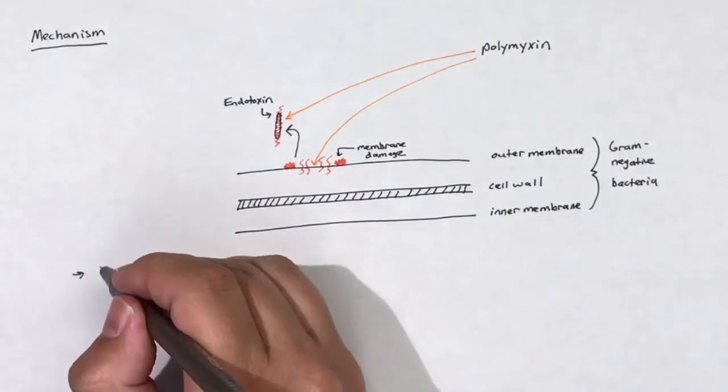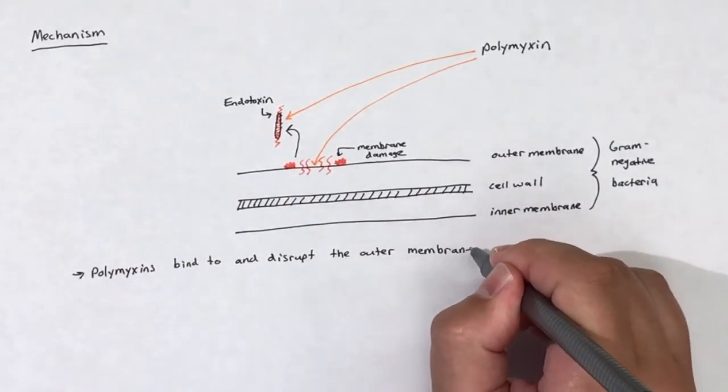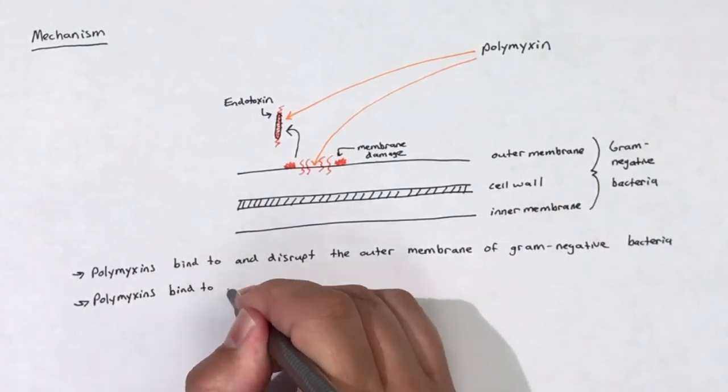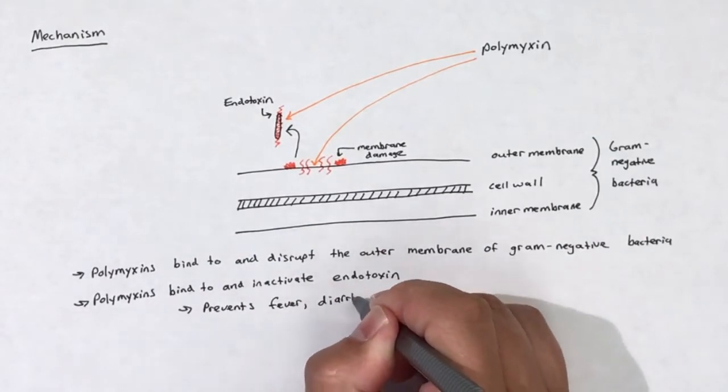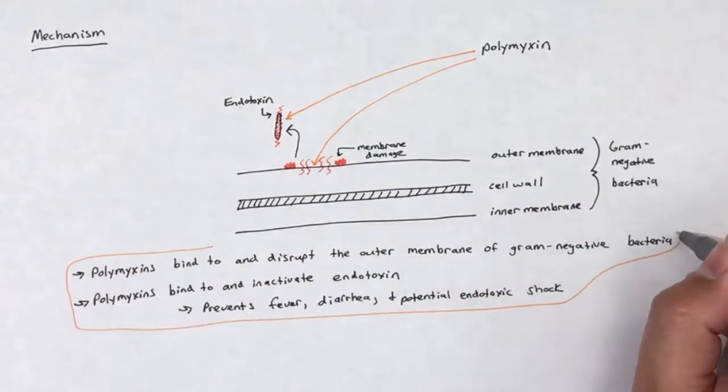In addition to disrupting the outer membrane of gram negative bacteria, polymyxins bind to and inactivate endotoxin. This mechanism prevents endotoxin from being released into circulation, hence protecting the body from the toxic effects of endotoxin. These toxic effects include fever, diarrhea, and potential endotoxic shock, i.e. septic shock.